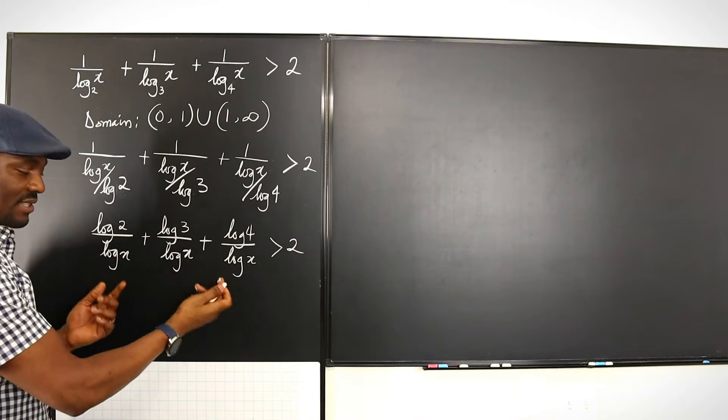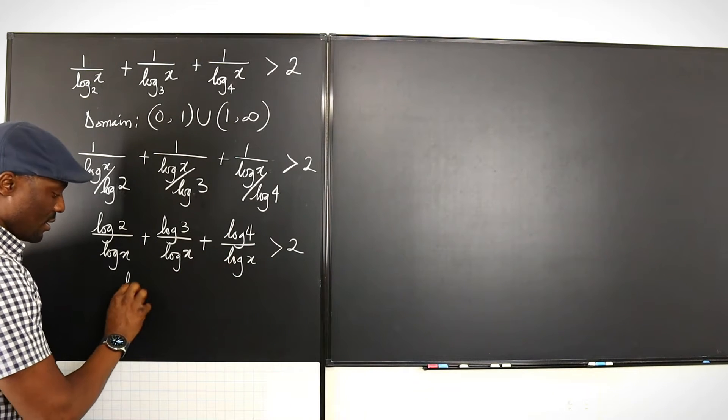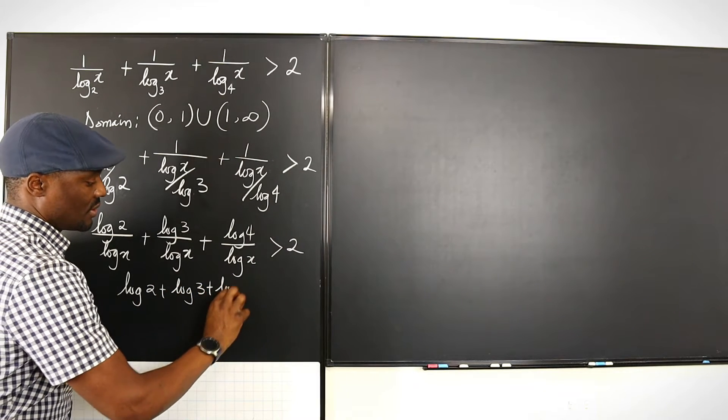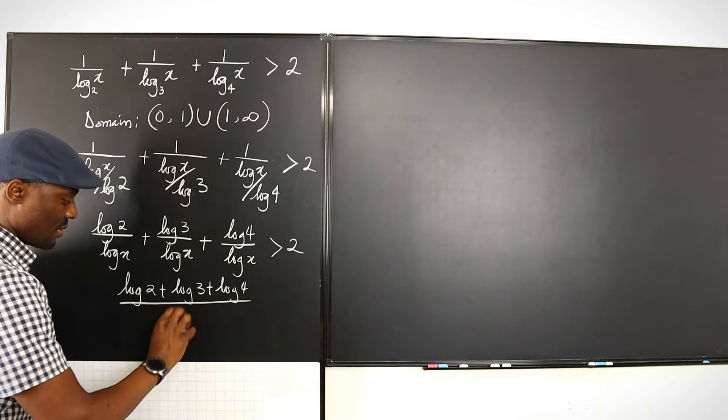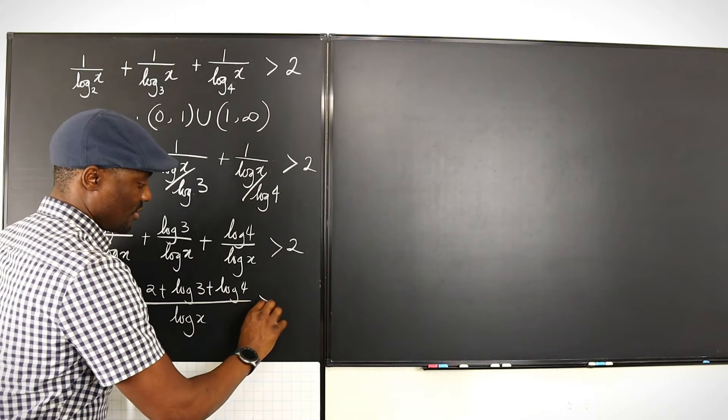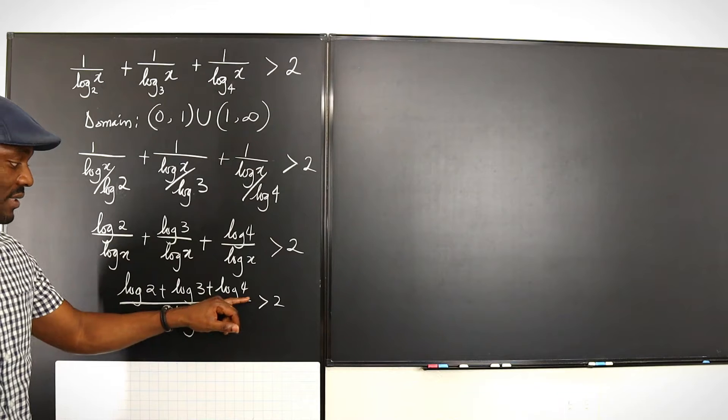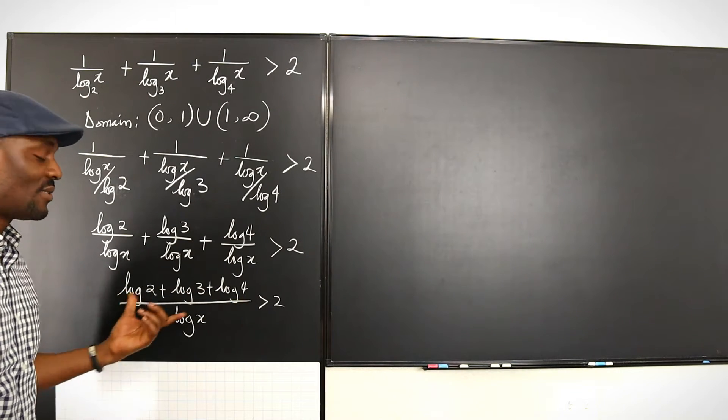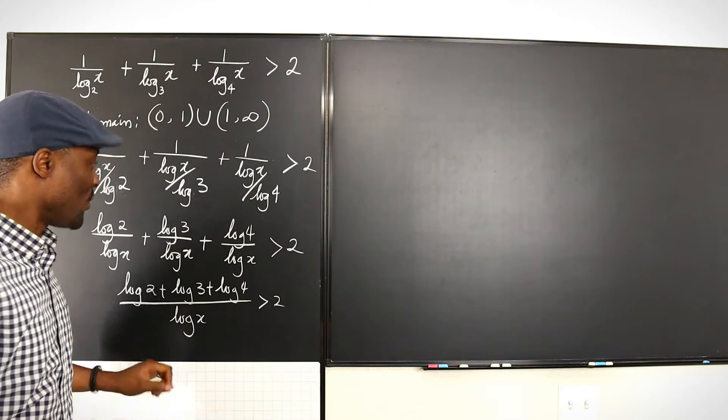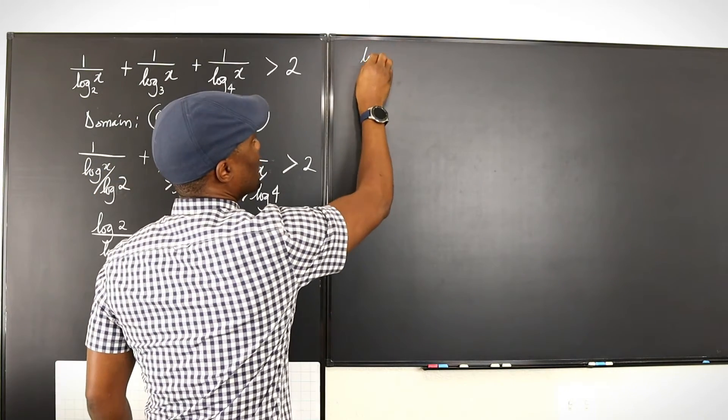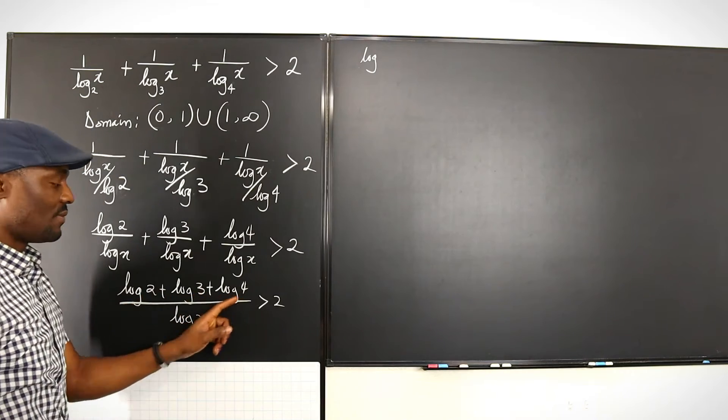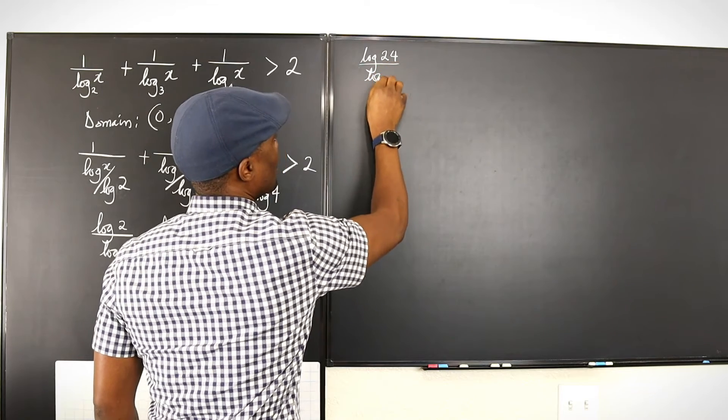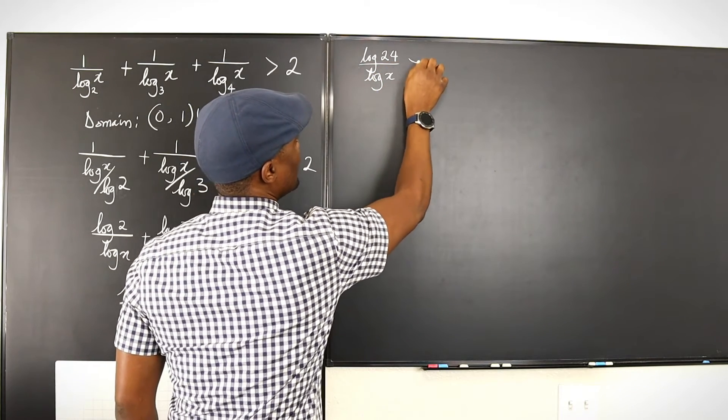So what we have right now would be log two over log x plus log three over log x plus log four over log x, and that's greater than two. Since this has the same base, that's going to be log two plus log three plus log four over log x is greater than two. Let's apply the law of addition here. If you're adding logarithms, it's the same thing as multiplying the arguments.